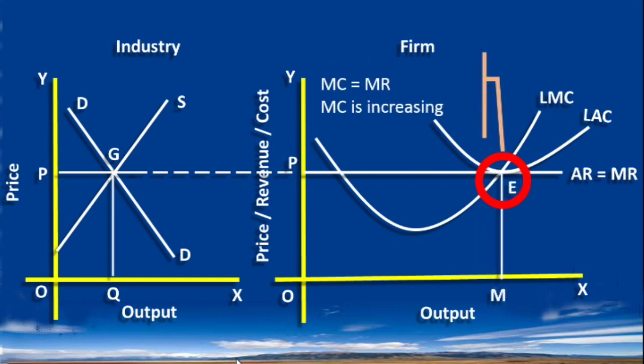At this new equilibrium, marginal cost is equal to marginal revenue, and marginal cost is increasing. The firm is earning normal profit because average revenue is equal to average cost. This is how all the firms in the perfectly competitive market manage to be in equilibrium.